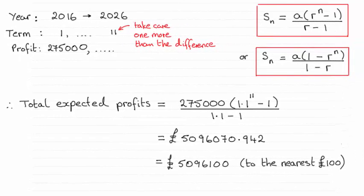Okay, as you can see, the total expected profits between 2016 to 2026 inclusive, to the nearest hundred pounds, is five million ninety-six thousand one hundred.